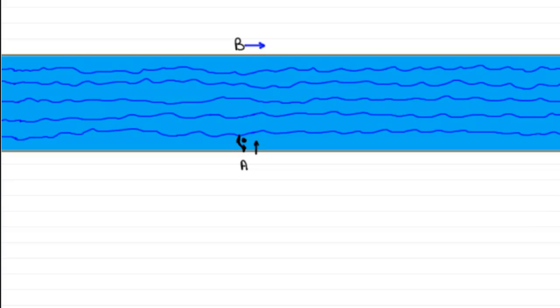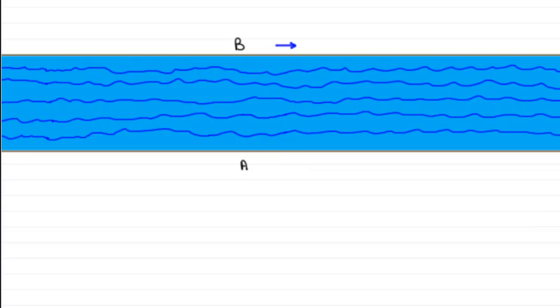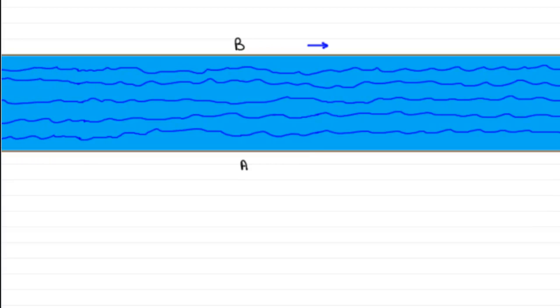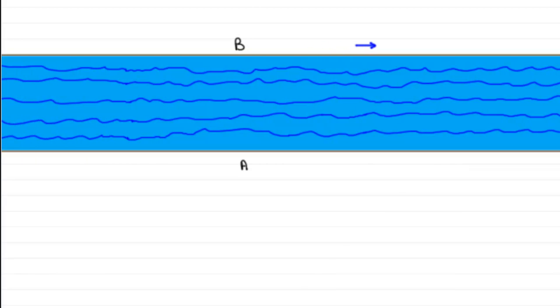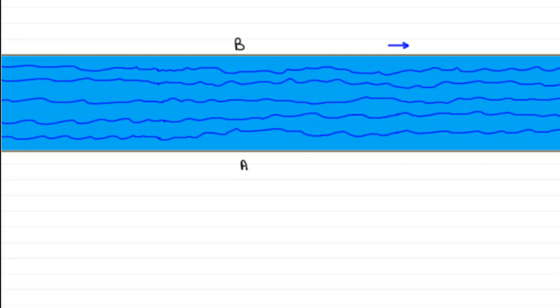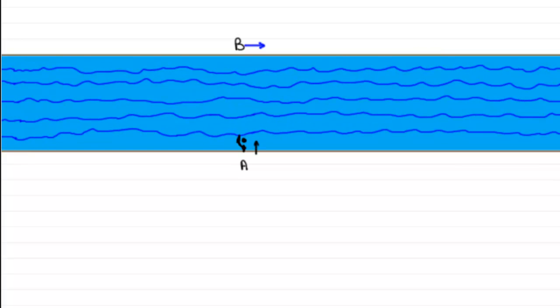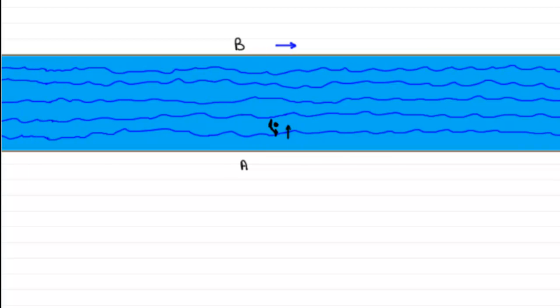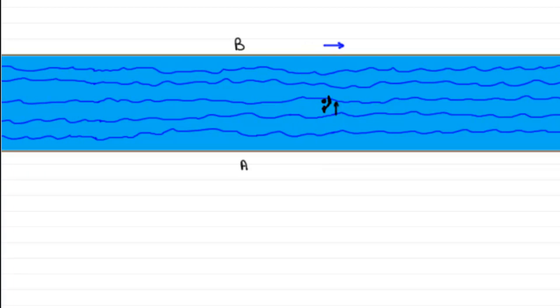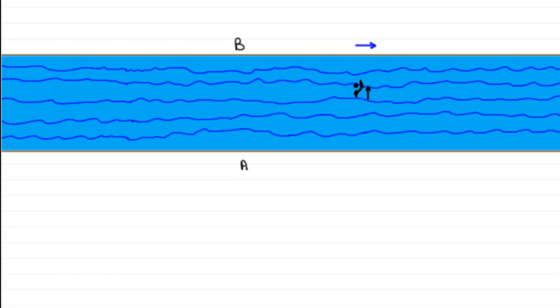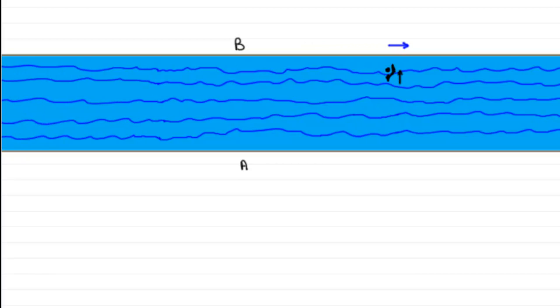But what happens if there is a current flowing in the river? Will the swimmer be able to still go from A to B with ease? Well, that's the aim of this video. So if the swimmer decides to swim from A to B and there is a current in the river, then what happens is that it gets carried downstream.